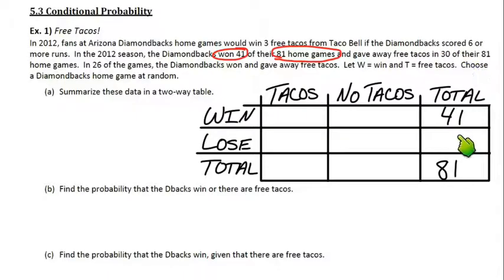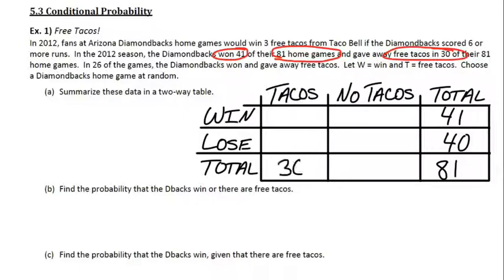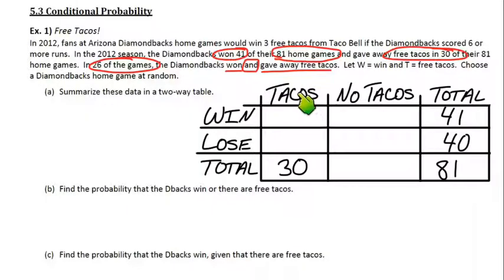That should tell you how many losses there were total. There were 41 wins out of 81 — that's 40 losses. And then we have 30 tacos given out total, so whether they win or lose, they gave out 30 tacos — 30 taco nights. In 26 of the games, they won and gave away free tacos. So that would be the intersection of taco and win — that's 26. And from there, we can figure the rest of the table out.